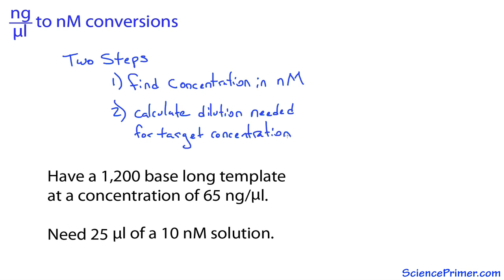Of course, this only works if the desired concentration is more dilute than the sample starting concentration. To step into the first part, I'll write down all of the information I need to solve it. The concentration of the starting solution is 65 nanograms per microliter. Here, the DNA has a length of 1,200 bases.